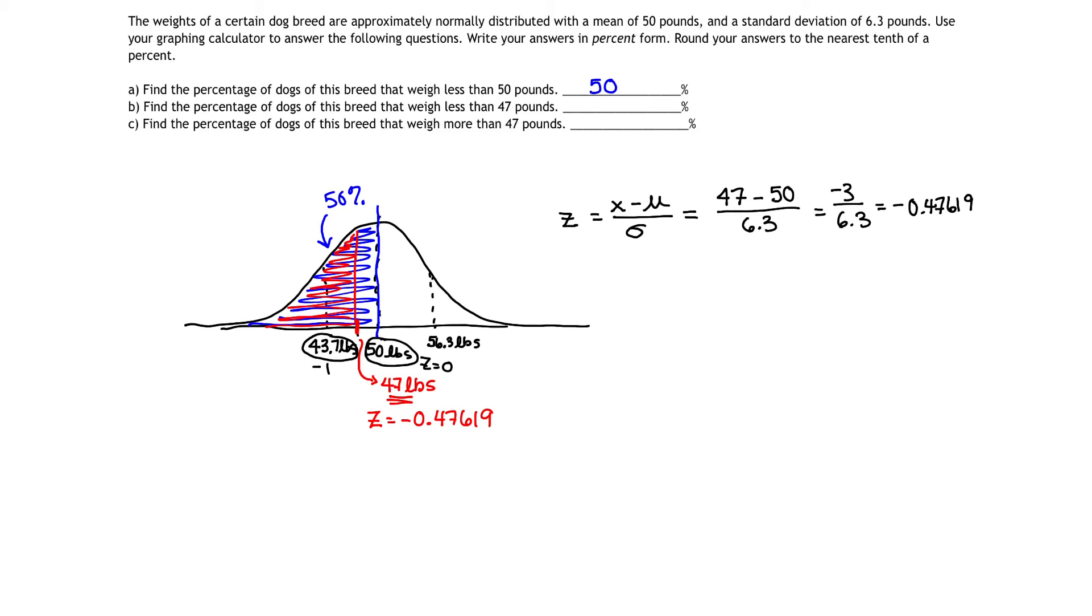So our Z score is negative 0.47619. We're going to use this Z score and look on our chart. When we look on our chart, remember, our Z values are actually rounded to the nearest hundredth or two decimal places. So I'm going to round this Z value two decimal places over, and I'm going to get negative 0.4, and I'm actually going to round it down. Whether you round it down or up is not going to matter, but I want to make sure that I include all of them. So if I round to 0.48, that's going to put me just slightly under.